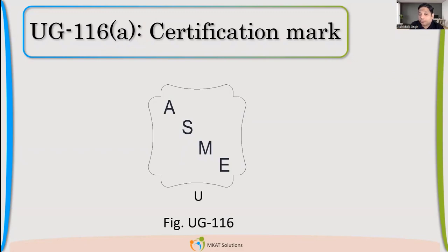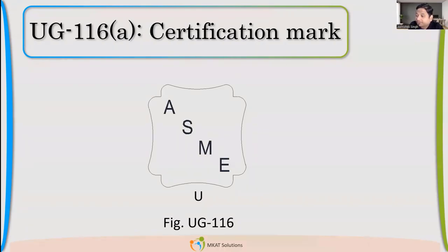When we stamp a vessel, your organization is authorized to use this mark. The main thing is that you are following the inspection requirements in the code. If you refer UG-90 through UG-97, there are inspection requirements for how the vessel should be inspected. If you are using an authorized inspector and meeting all the requirements from UG-90 to UG-97, then your vessel can be stamped.